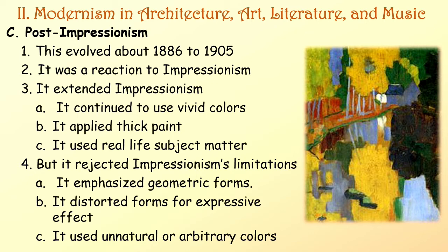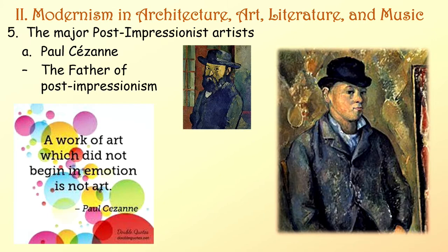Post-Impressionism evolved about 1886 to 1905 as a reaction to Impressionism. It extended Impressionism by continuing to use vivid colors, thick paint, and real-life subject matter, but it also rejected Impressionism's limitations. Instead, it emphasized geometric forms, distorted forms for expressive effect, and used unnatural or arbitrary colors. The major Post-Impressionist artists were Paul Cézanne, the father of Post-Impressionism, and Vincent Van Gogh.